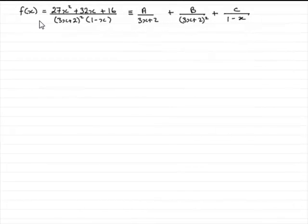Now we're told that f of x can be expressed in partial fractions where we've got a over 3x plus 2, b over 3x plus 2 all squared plus c over 1 minus x. We're asked then to show that a comes to 0 and find the values of these constants b and c.